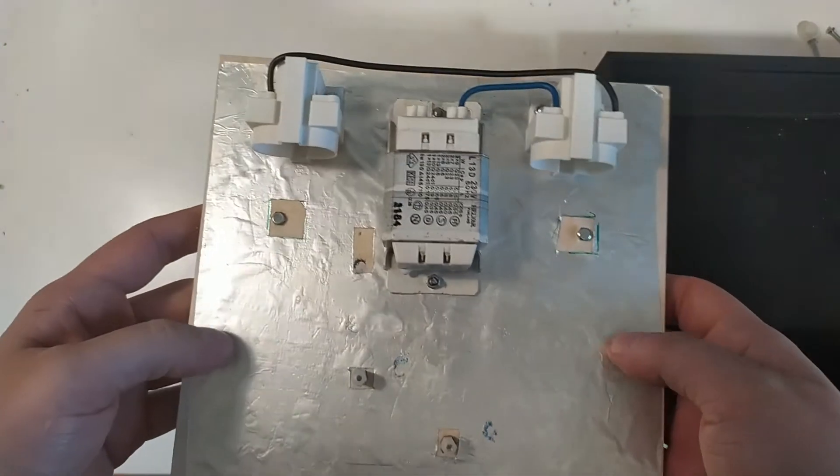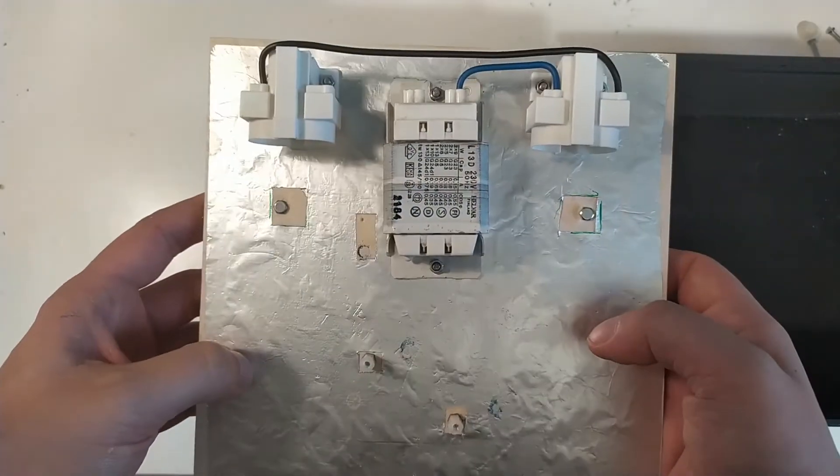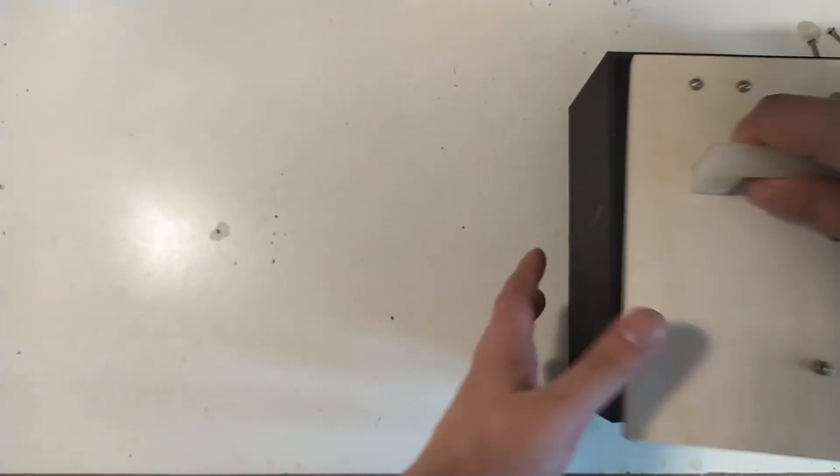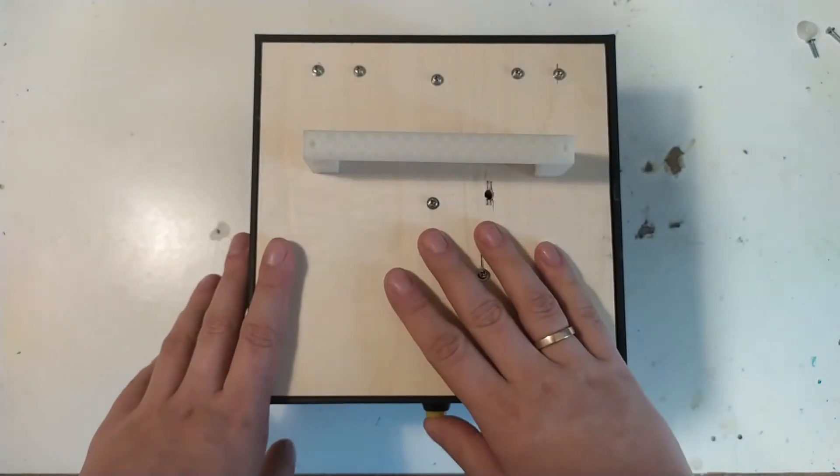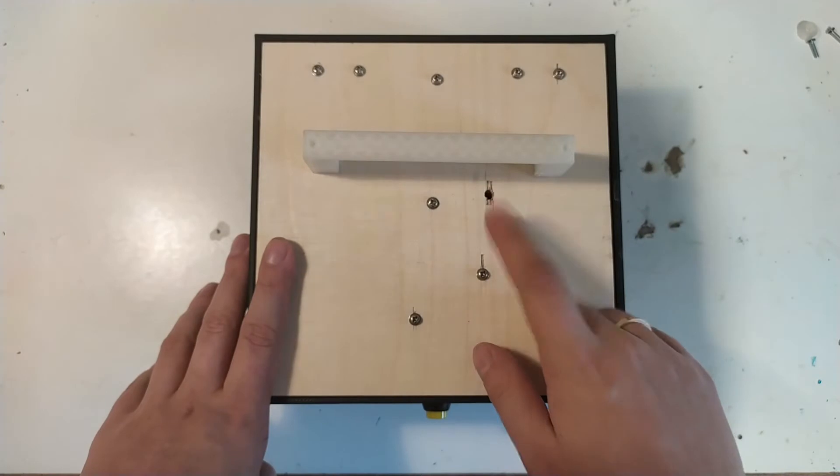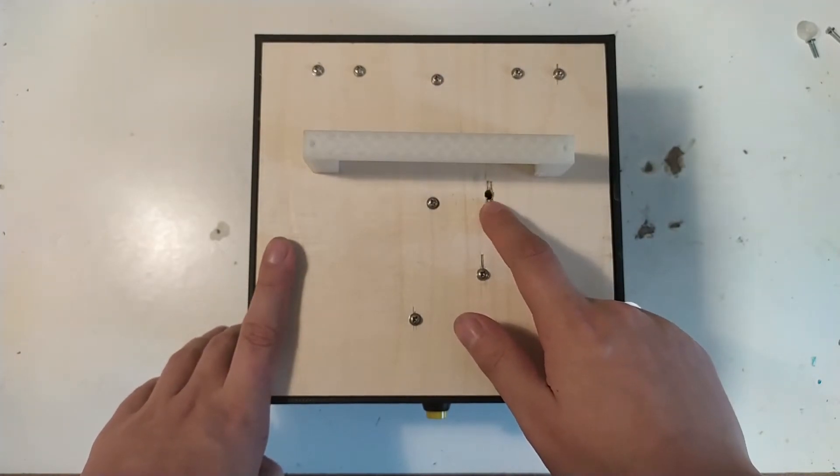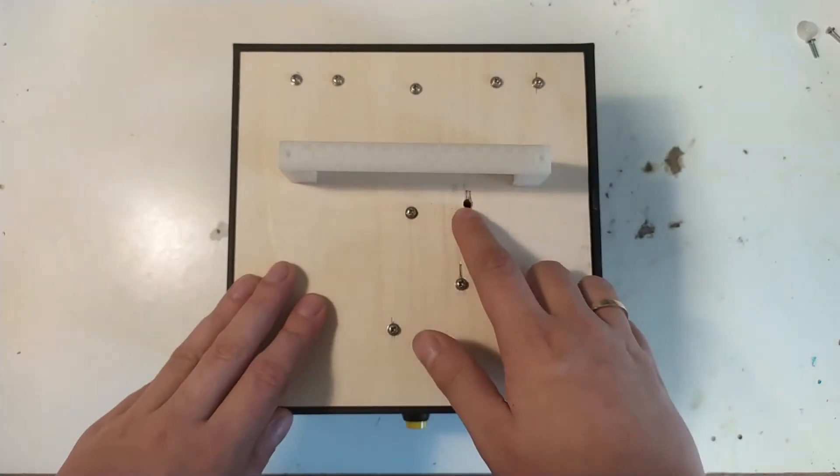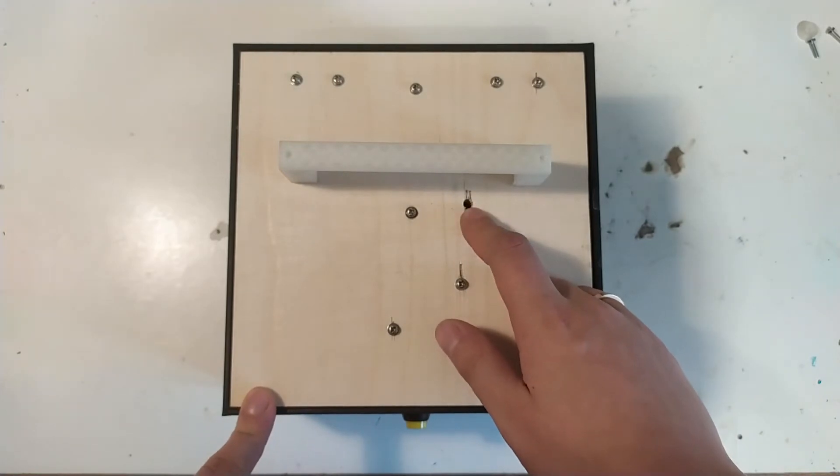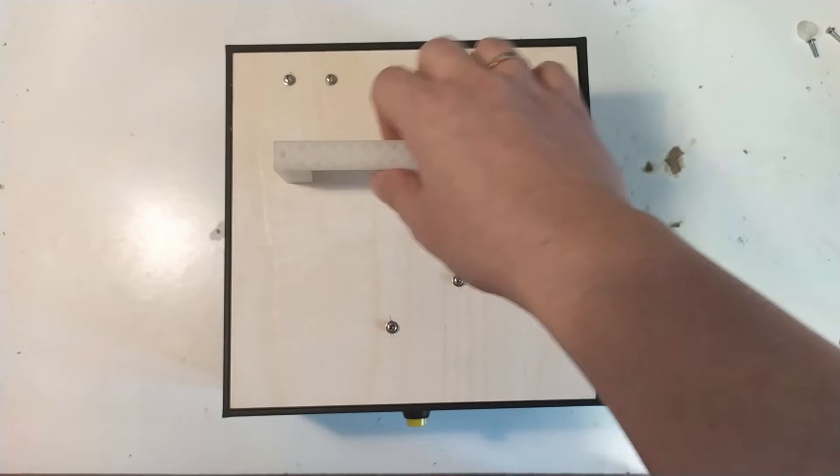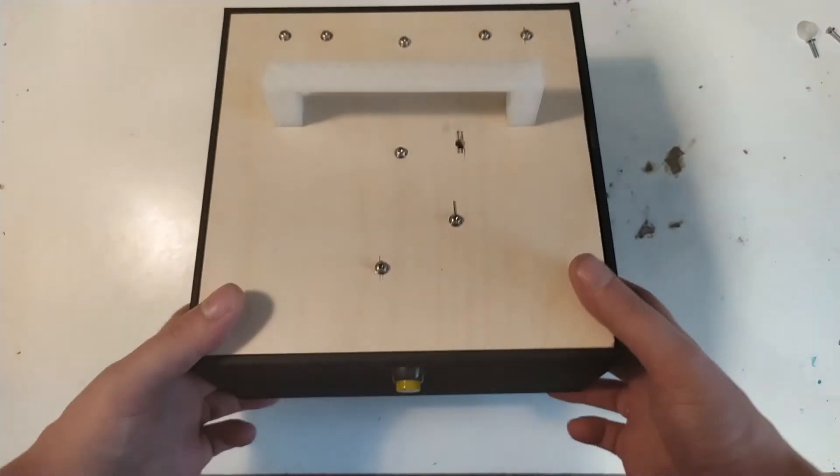What this doesn't have yet is a timing circuit, because what we want is we put our circuit board in there, we close the lid, push the button, and then it gives us exposure for a certain time. And you can see here there's a hole for an LED, which will tell us when the thing is on and when it's done irradiating the circuit board. So let's go over the design for the timing circuit.